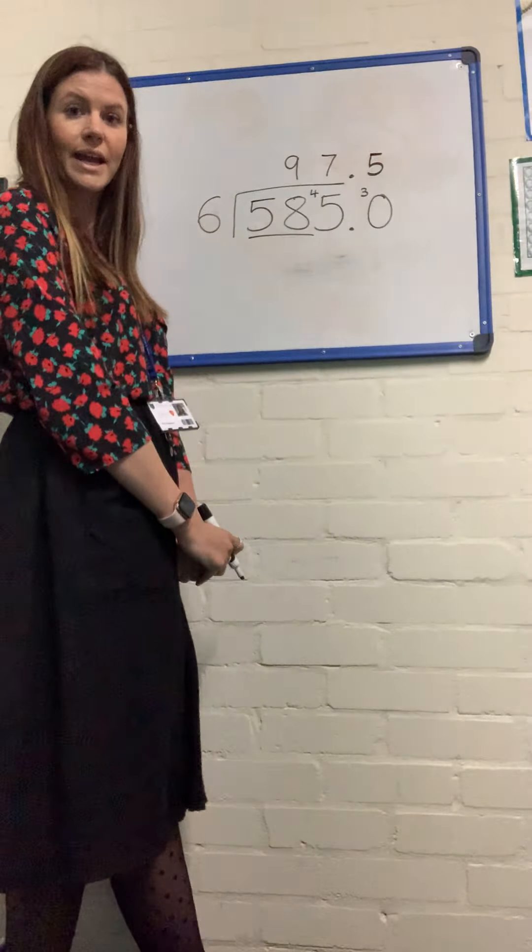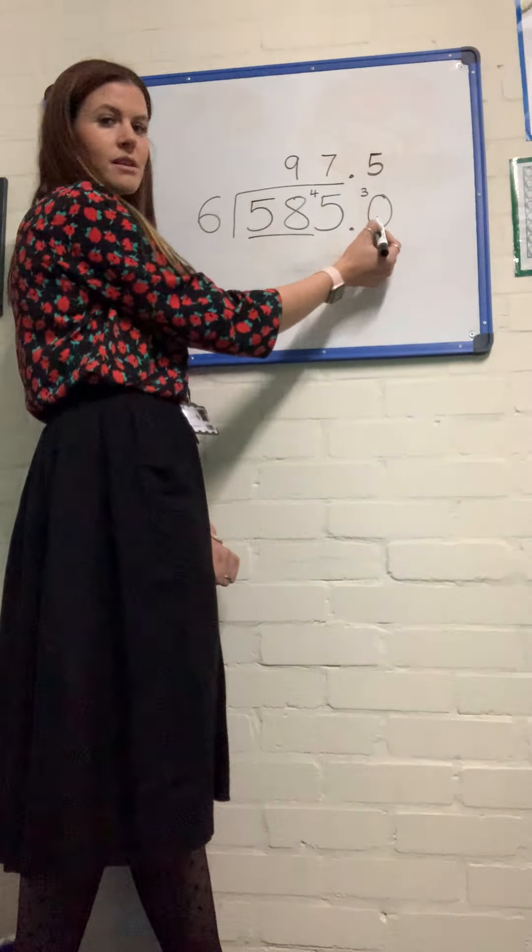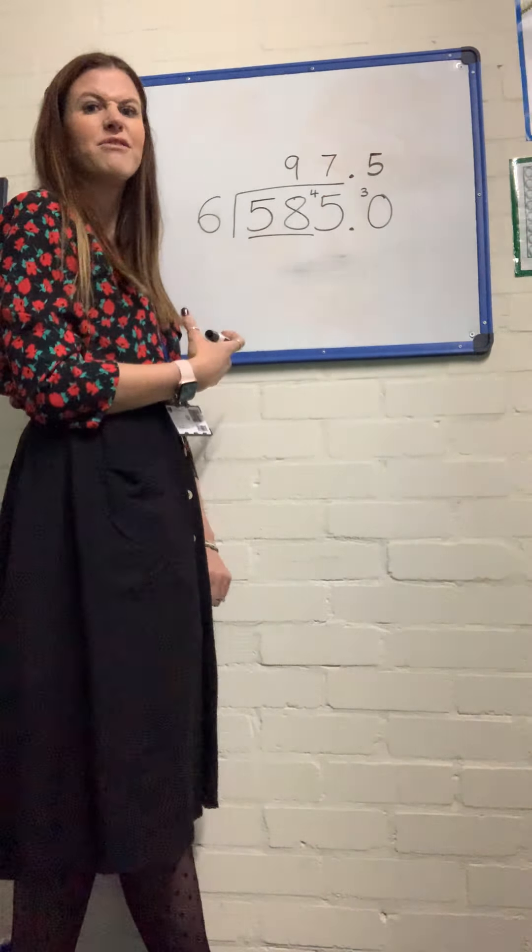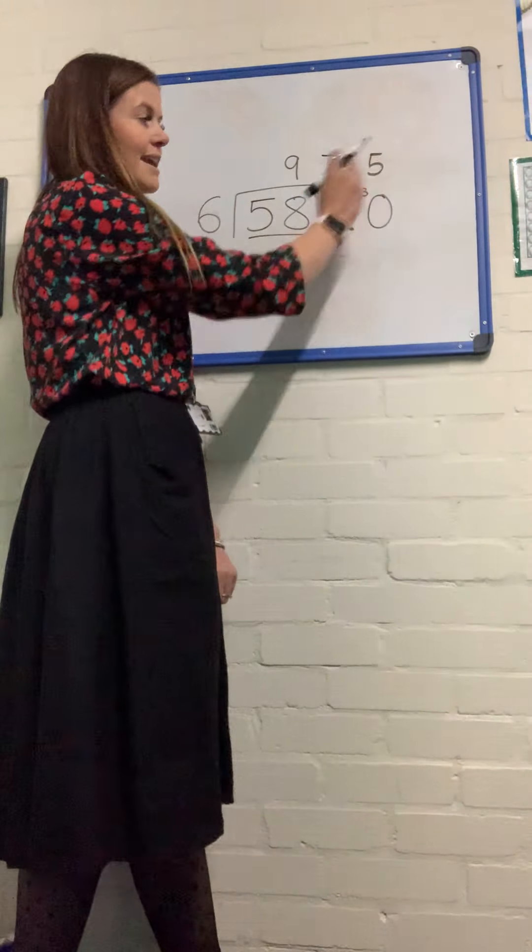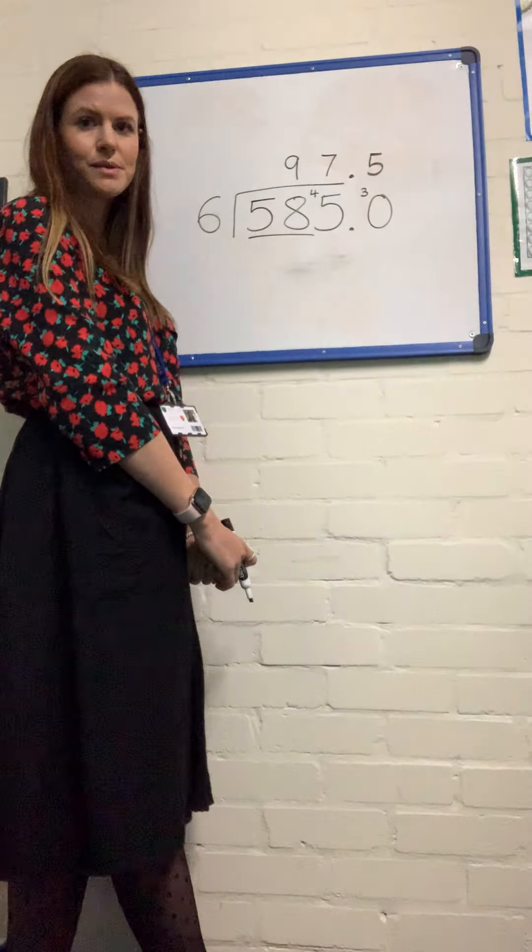So I've got the same as what I got before, which was 97.5. But this time, I've looked at the tenths column. Now once we understand that it's 30 tenths, what you might find yourself saying is, how many 6s go into 30? It's 5. But remembering that that's in the tenths column, that's the language we need to be using.